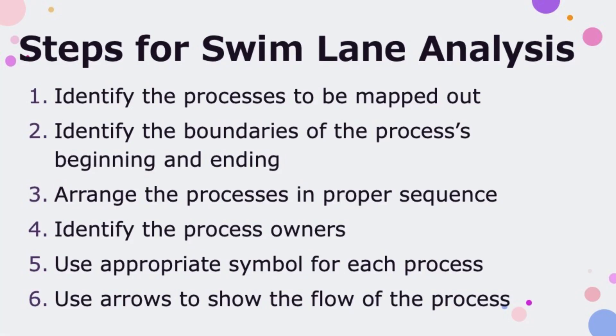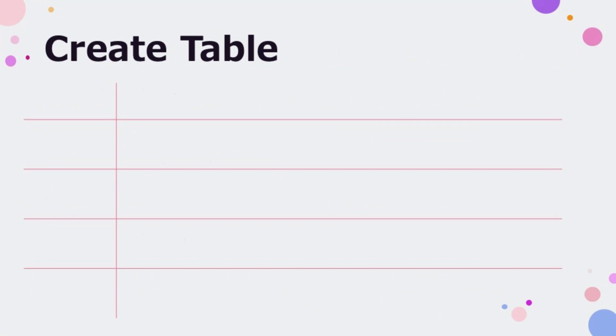The steps to create a swim lane are: 1. Identify the processes to be mapped out. 2. Identify the boundaries of the process's beginning and ending. 3. Arrange the processes in proper sequence. 4. Identify the process owners. 5. Use appropriate symbols for each process. 6. Use arrows to show the flow of the process.